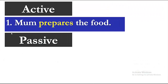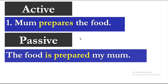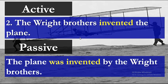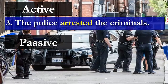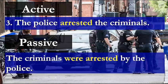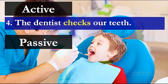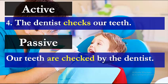Number three: 'The police arrested the criminals.' The object is 'the criminals,' plural, so 'were,' then 'arrested.' So: 'The criminals were arrested by the police.' Number four: 'The dentist checks our teeth.' The object is 'our teeth,' plural, so 'are,' then 'checked.' So: 'Our teeth are checked by the dentist.'